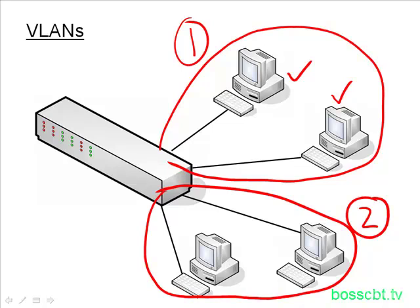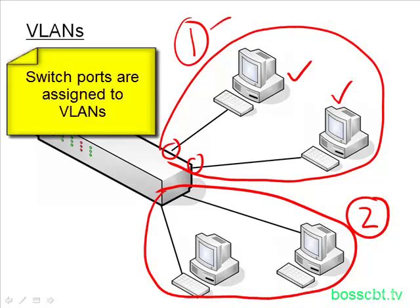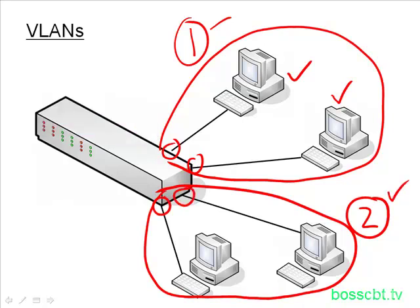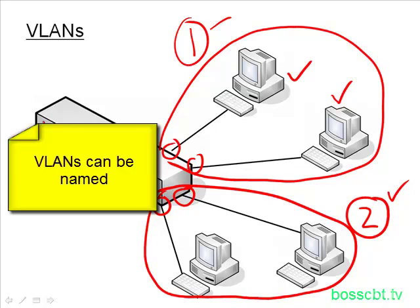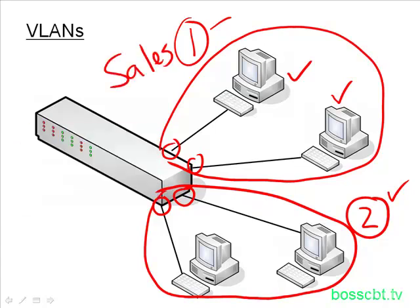If we think about the switch itself, each of the ports used to connect the PCs would be assigned to a VLAN. These two ports would be assigned to VLAN1, and these ports would be assigned to VLAN2. You can also name VLANs in your configuration — this one up here could be named Sales and down on the bottom it's Engineering. That makes it administratively easier to figure out what a VLAN means and who's in it.